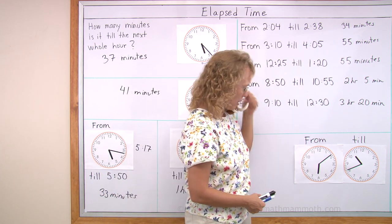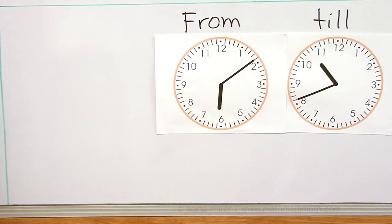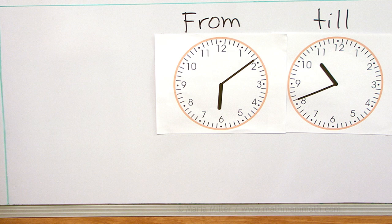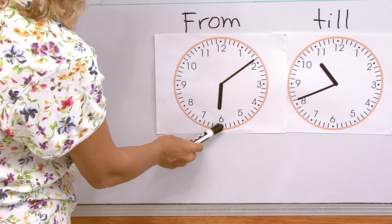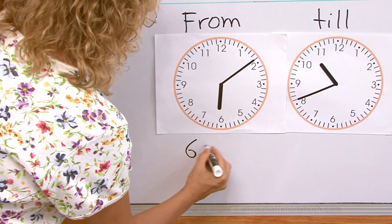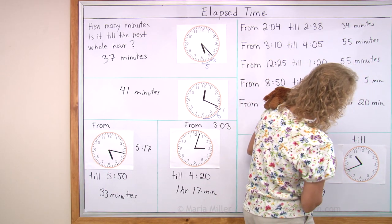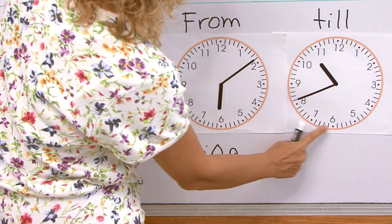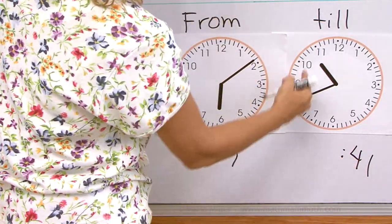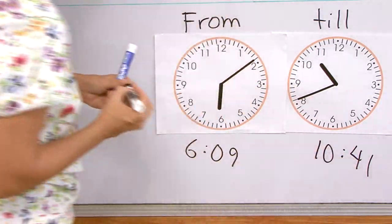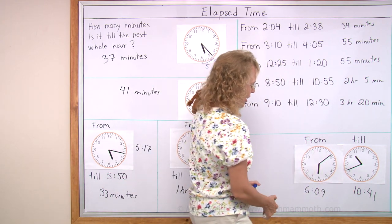This is a difficult problem. From this time till that time, how much time passes? What shall we do? Let's figure out what time it is, actually. There's six and nine minutes, 6:09. This one? Here's 30 minutes, 35, 40, 41 minutes. 10 hours. What do you think, Matthew? How much time passes between these two times?